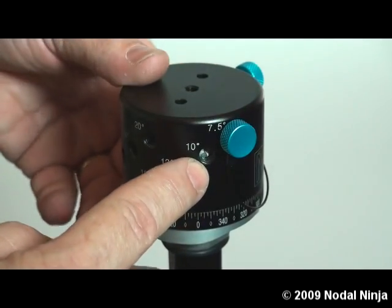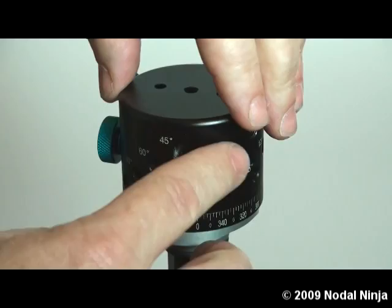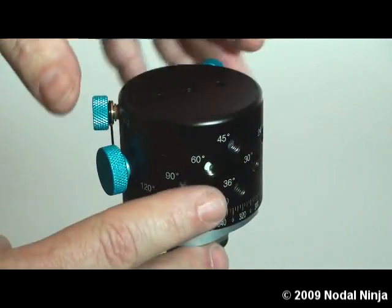If we put the knob into the 10-degree hole, it would give you one stop every 10 degrees. And we have several different detents available with the one knob.